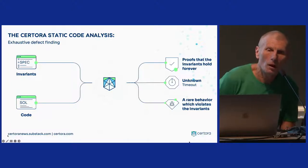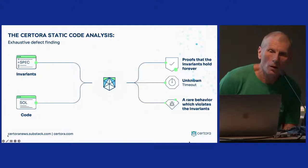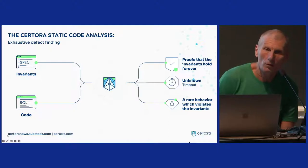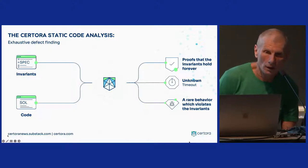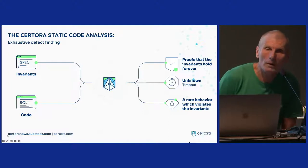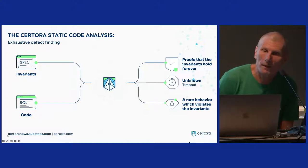The more modular your code is, the easier it is to verify. You can also simplify the code — for example, assume there are no interest rates. If it finds a bug, great. If it doesn't, it may be either that the code is correct or that you made too many simplifying assumptions.